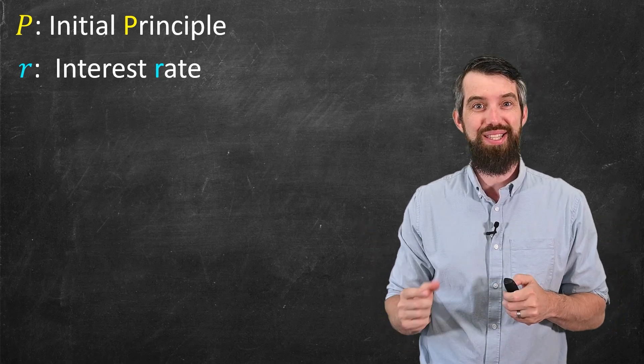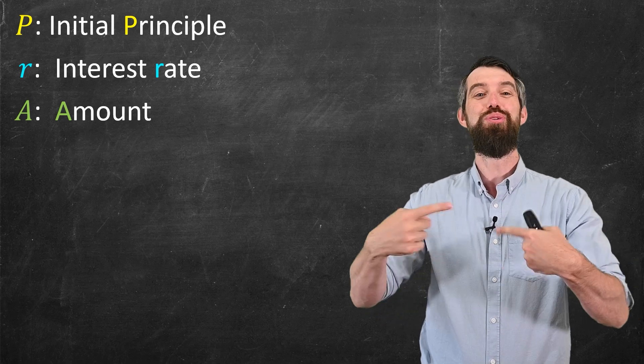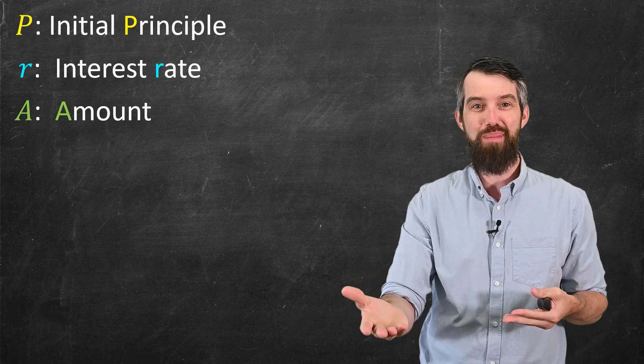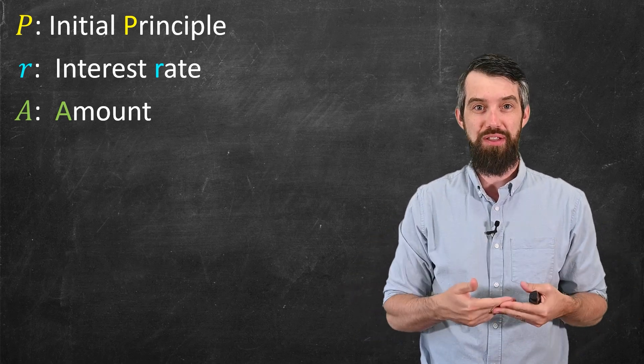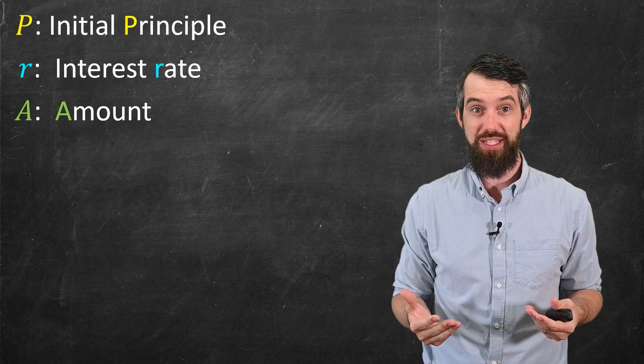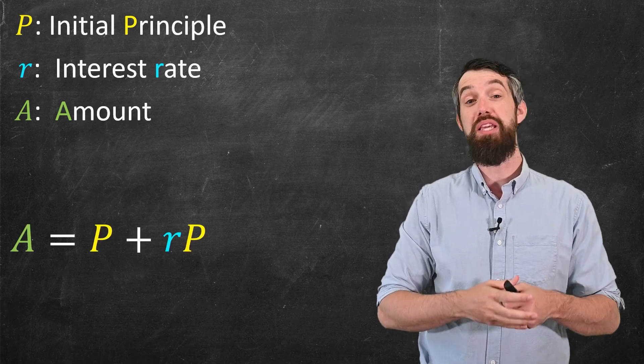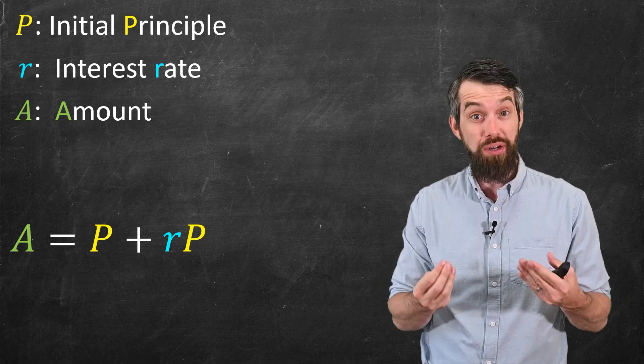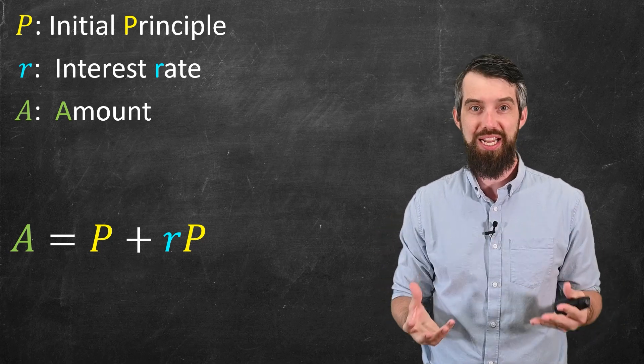And then what I want to know is the amount A that I'm going to get back. So if I loan out my money, what's the amount that I'm going to receive? So what's a good formula for this? Well, I'm going to say that the amount A should be equal to the principal plus r times the principal. What's the idea here?